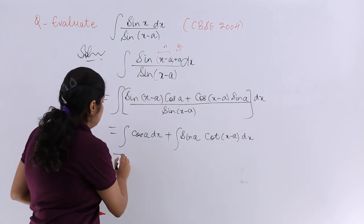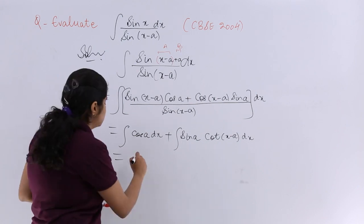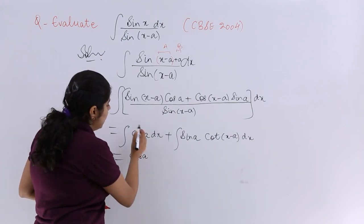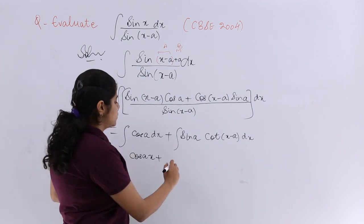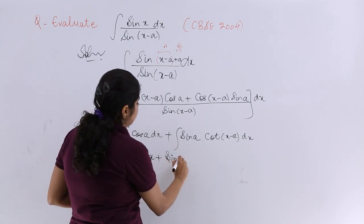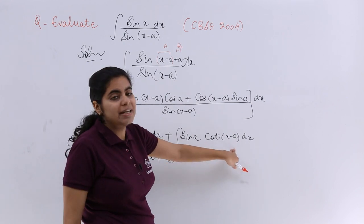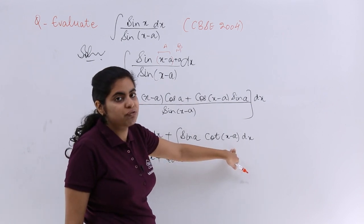Now what is the last thing that we are going to consider? Cos a as a constant outside. Integration of 1 dx is nothing but x plus sin a constant outside. Integration of cot(x-a), what is integration of cot(x-a)?